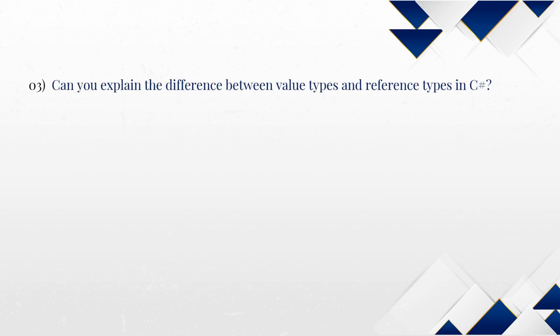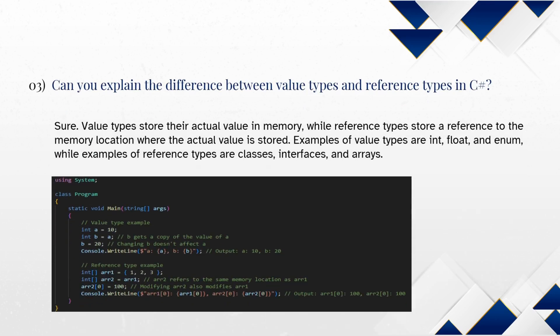Can you explain the difference between value types and reference types in C-Sharp? Sure. Value types store their actual value in memory, while reference types store a reference to the memory location where the actual value is stored. Examples of value types are int, float, and enum, while examples of reference types are classes, interfaces, and arrays.